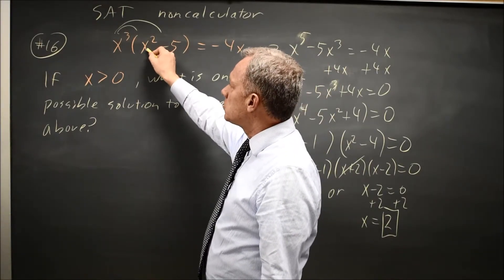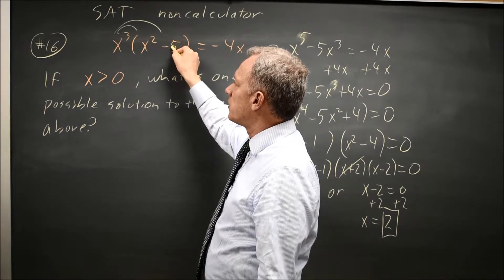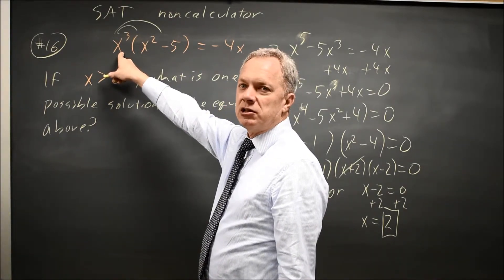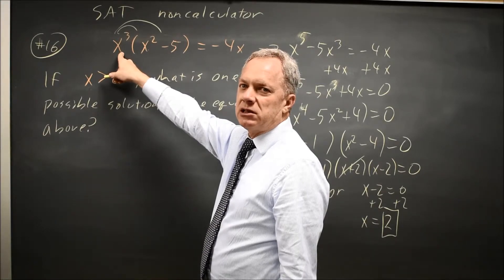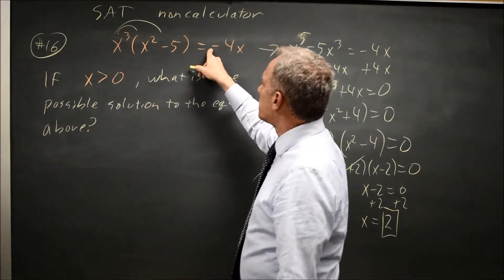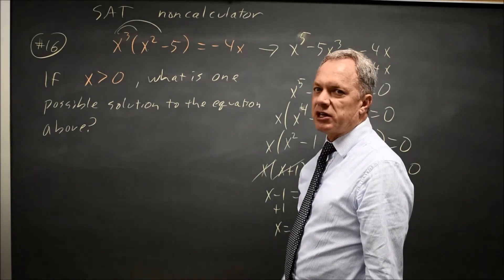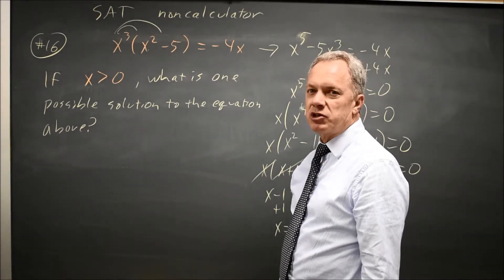Let's try positive 2. 2 squared is 4 minus 5 is negative 1 times 2 cubed. 2 cubed is 8. Negative 1 times 8 is negative 8. On the right-hand side, negative 4 times x when x is 2 is also negative 8. So positive 1 and positive 2 both work.